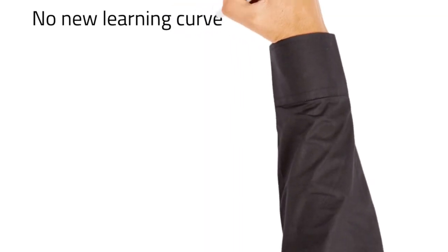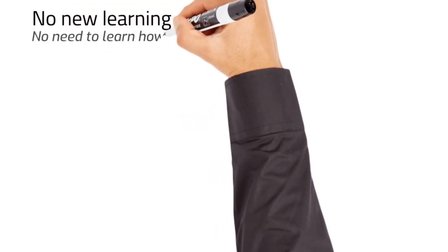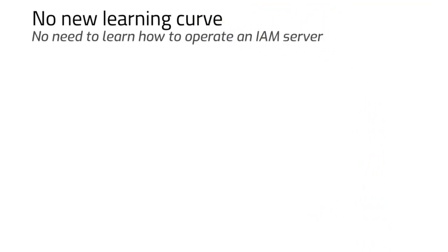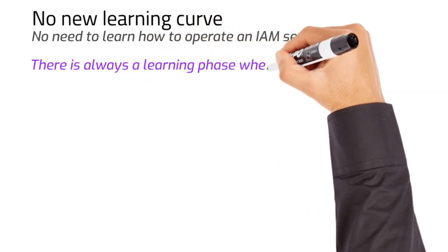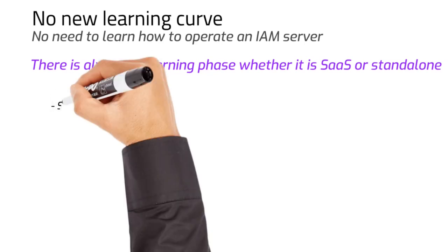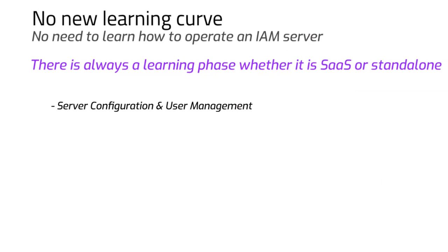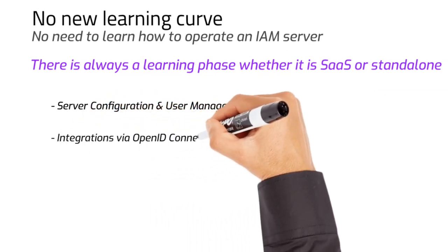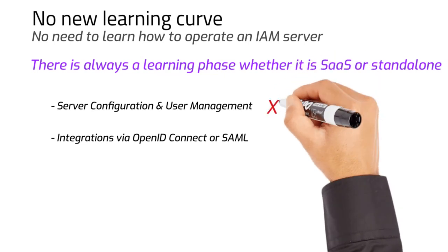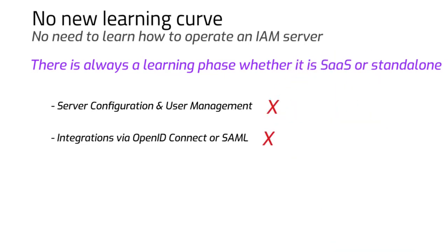The second reason is there's nothing new to learn. No need to learn about operating or managing an external identity and access management system. If somebody picks an external IAM solution, it can be either SaaS or standalone. Certainly, there comes a learning phase — things like user management and integration with existing applications via a standard protocol like OpenID Connect need to be learned.